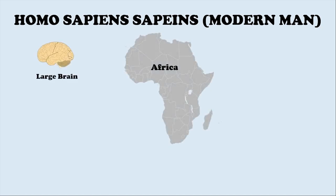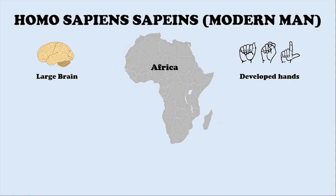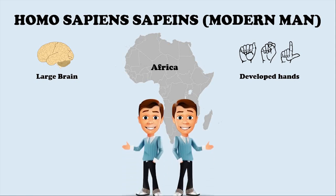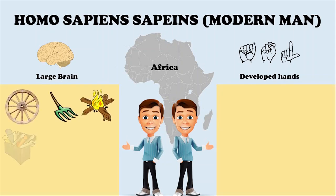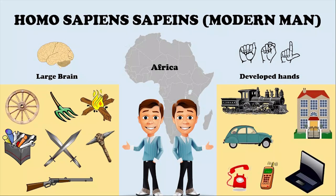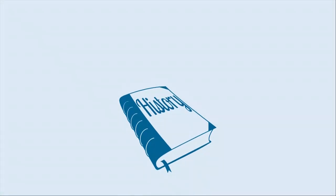The Homo sapiens sapiens, which is the modern man, are a part of Homo sapiens and they originated in Africa. A large brain combined with well-developed hands had revolutionary consequences. It resulted in the rapid development of tool technology. If you find this video helpful, do drop a like and please subscribe to the channel.